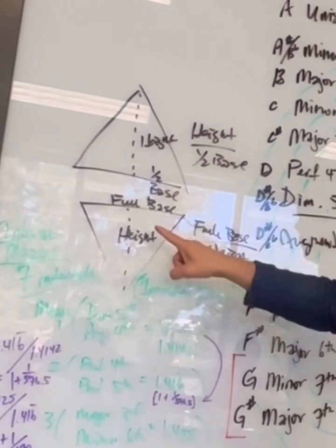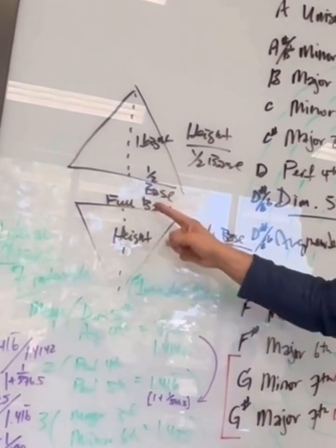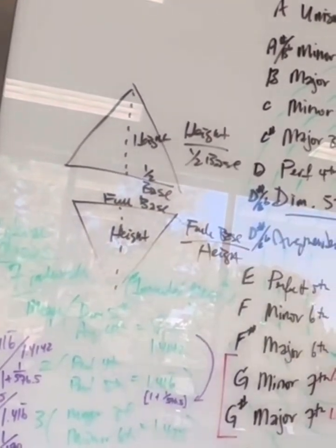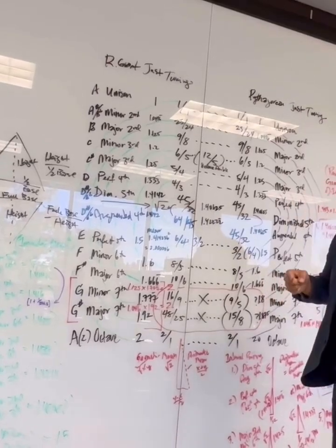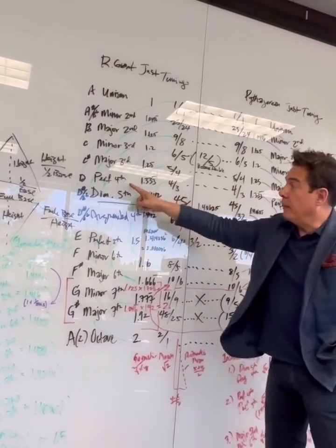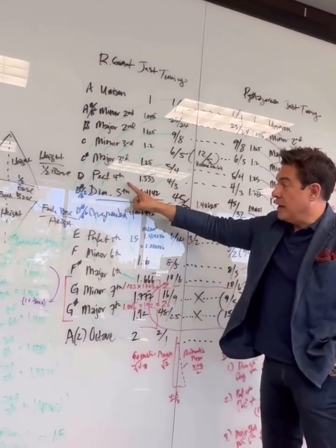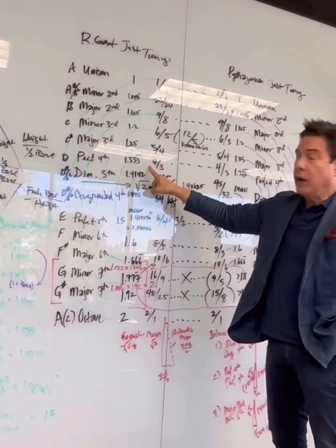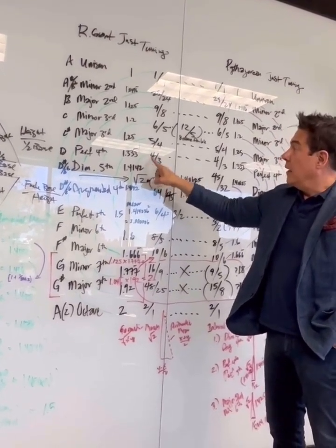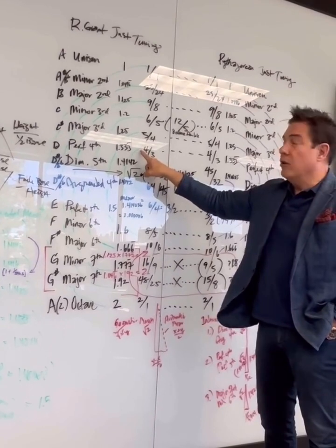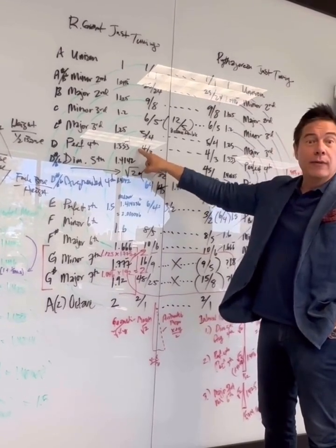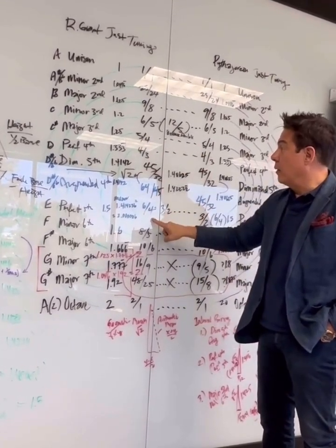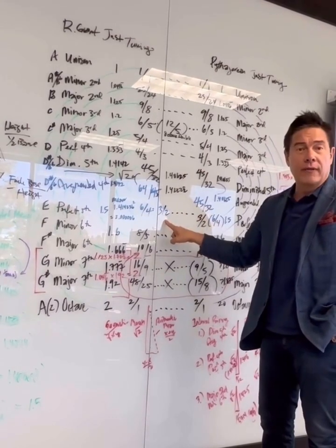The inverse would simply be the full base over its height. The way that would get represented: a perfect fourth has an inverse of a perfect fifth. A perfect fourth is 4 over 3. Simply double the 3, make it the numerator, make the 4 the denominator, so it becomes 6 over 4, which equals 3 over 2 — the perfect fifth.